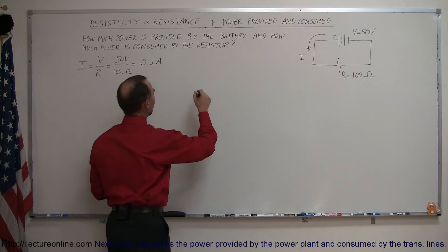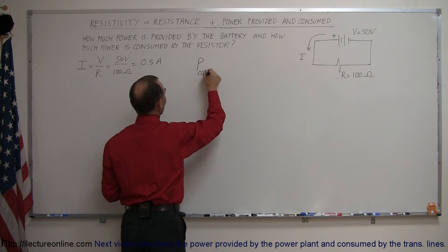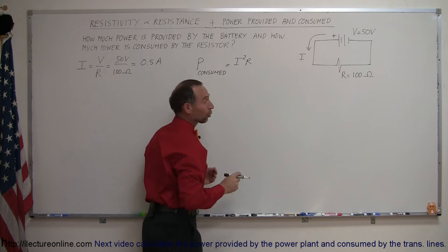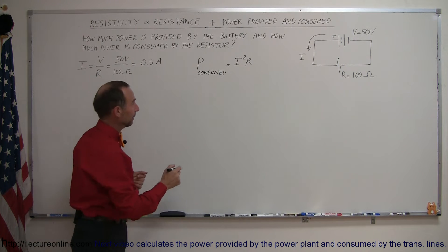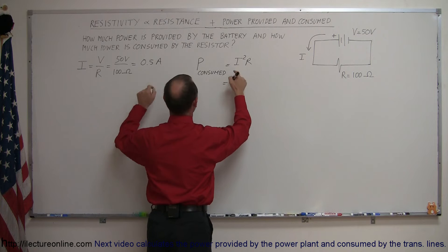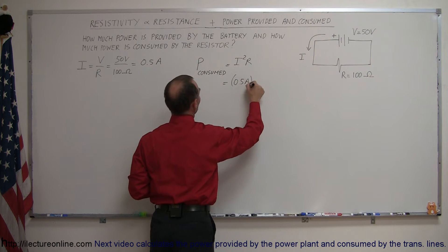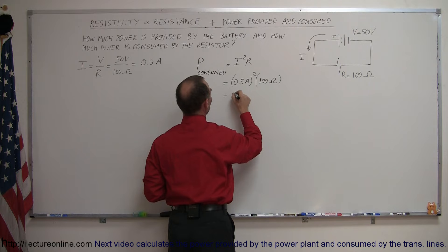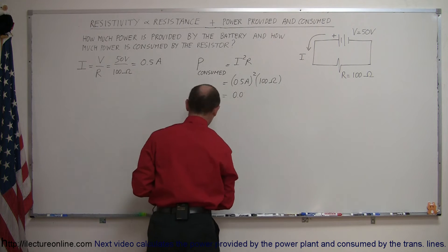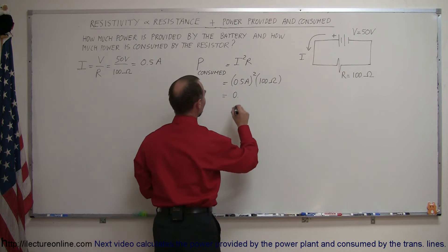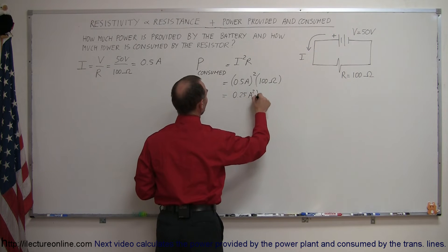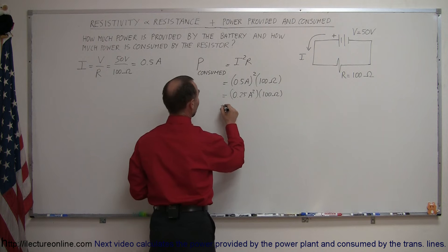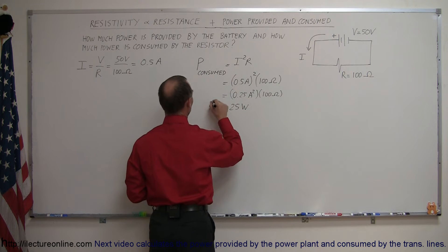It turns out that power consumed by any device in the circuit is equal to I squared R. So it's the current squared times the resistance. And if we then replace the current by what we just found, 0.5 amps squared times the resistance, which is 100 ohms. We can see that 0.5 squared is 0.25. So 0.25 amps squared times 100 ohms. And it turns out that amps squared times ohms is equal to watts. And so it's equal to 25 watts power consumed.